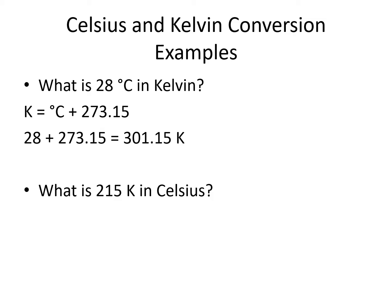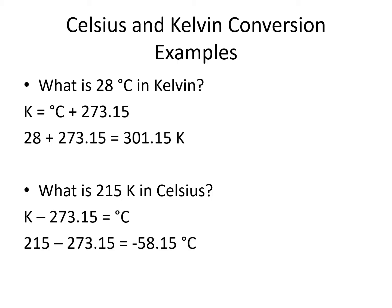In our second example, we are converting from Kelvin to Celsius. To do this, we will need to rearrange our equation to get Celsius by itself. We subtract 273.15 from both sides and come out with Kelvin minus 273.15 equals degrees Celsius. We plug in our Kelvins into our equation where it says K and get 215 minus 273.15 equals negative 58.15 degrees Celsius.